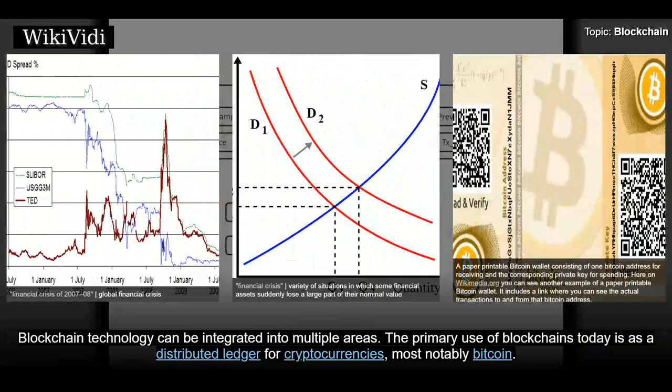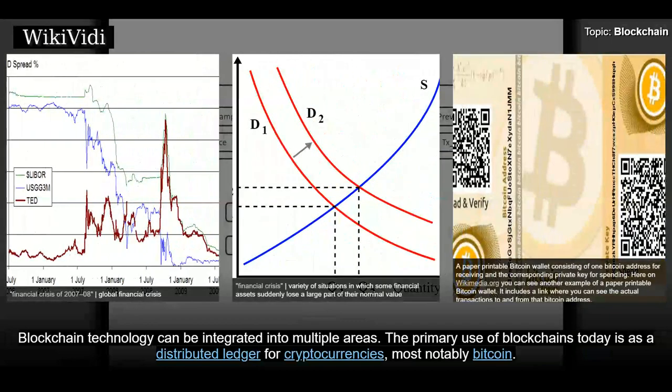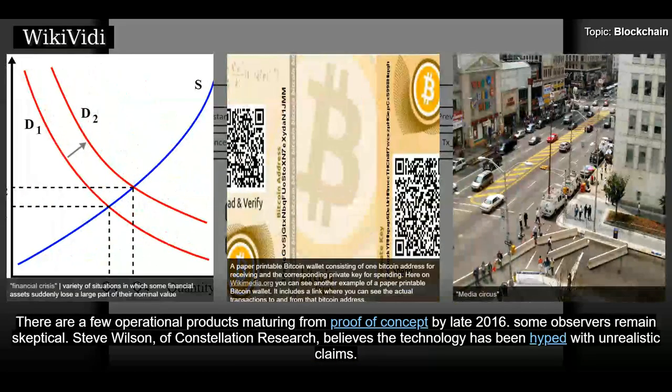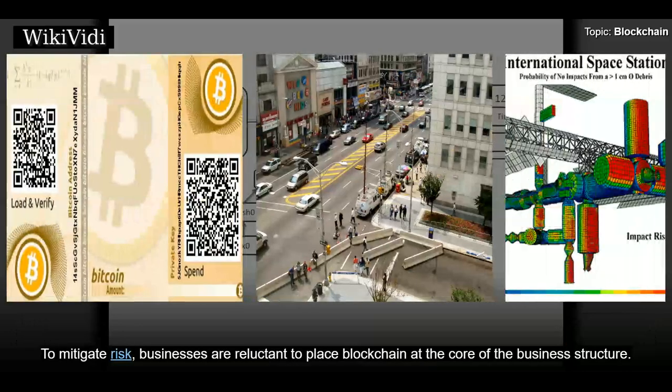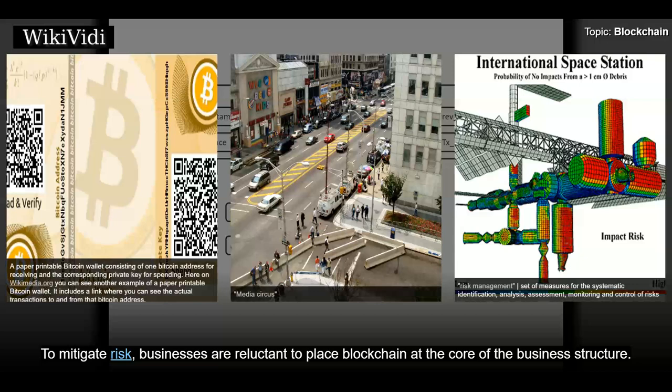Blockchain technology can be integrated into multiple areas. The primary use of blockchains today is as a distributed ledger for cryptocurrencies, most notably Bitcoin. There are a few operational products maturing from proof of concept by late 2016. Some observers remain skeptical; Steve Wilson of Constellation Research believes the technology has been hyped with unrealistic claims. To mitigate risk, businesses are reluctant to place blockchain at the core of the business structure.